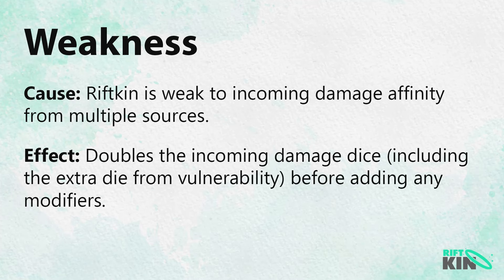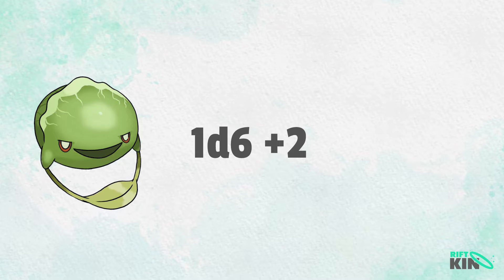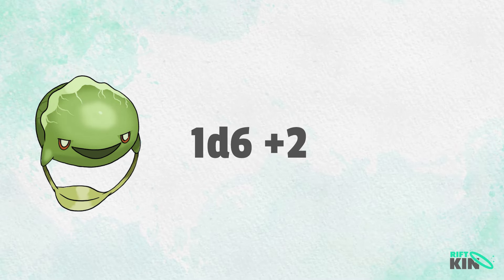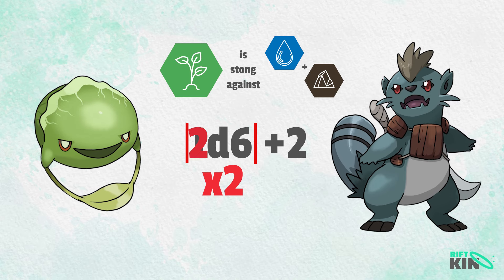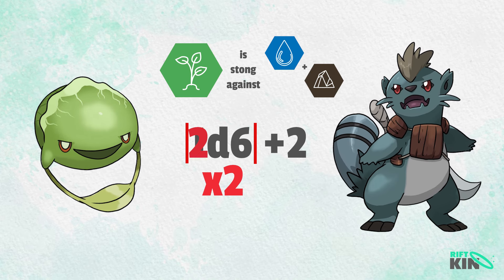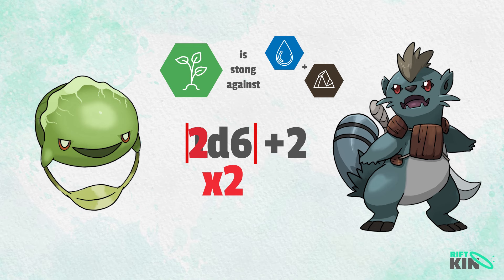Weakness! Weakness is the result of multiple sources of vulnerability and doubles the damage. When attacking with an affinity that your target is weak to, you double the total amount of damage rolled for the attack, then add your modifiers as normal. In this example, a cabblast would normally deal 1d6 plus 2 plant damage. Rolling a 4 on their dice, we would first double the die result, then add the modifier to the attack for a total of 10 plant damage. Modifiers are not doubled in damage calculations unless an ability or effect says otherwise.